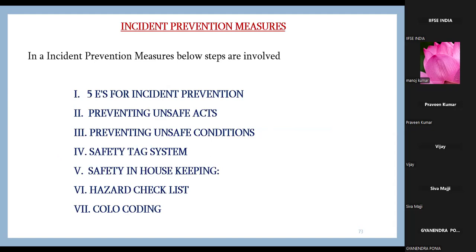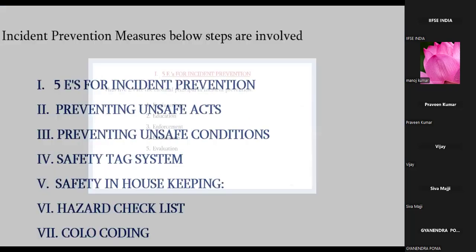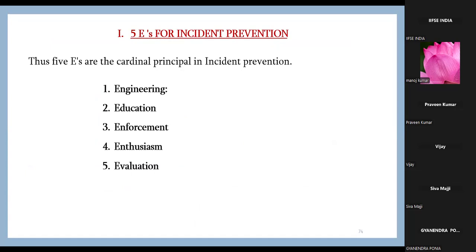Incident prevention measures include the five E's for incident prevention, preventing unsafe acts, preventing unsafe conditions, safety tag system, safety in housekeeping, hazard checklist, and color coding. The five E's — which appeared as an eight-mark exam question — stand for Engineering, Education, Enforcement, Enthusiasm, and Evaluation.